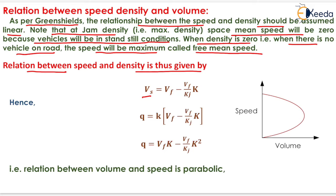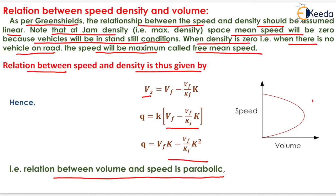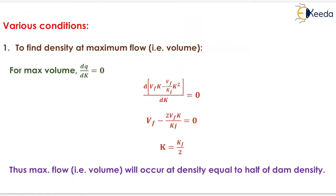So traffic volume Q equals K into Vf minus Vf upon Kj into K. On solving this, we will have Q equals Vf into K minus Vf upon Kj into K squared. That is, the relation between volume and density is parabolic, which is shown here.